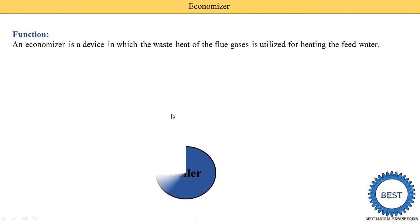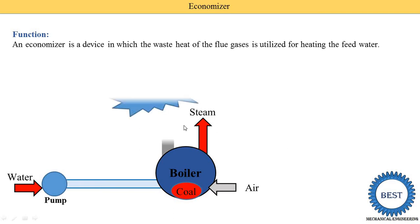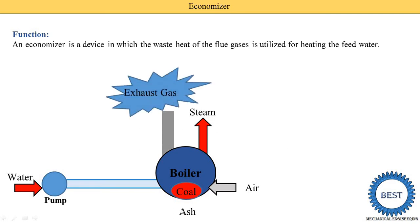Here I show you the location where the economizer is installed. In a boiler, three things are supplied: water, some fuel, and air. And the outputs are also three: one is steam, second is exhaust gases, and third is air. This is the common construction in boilers.